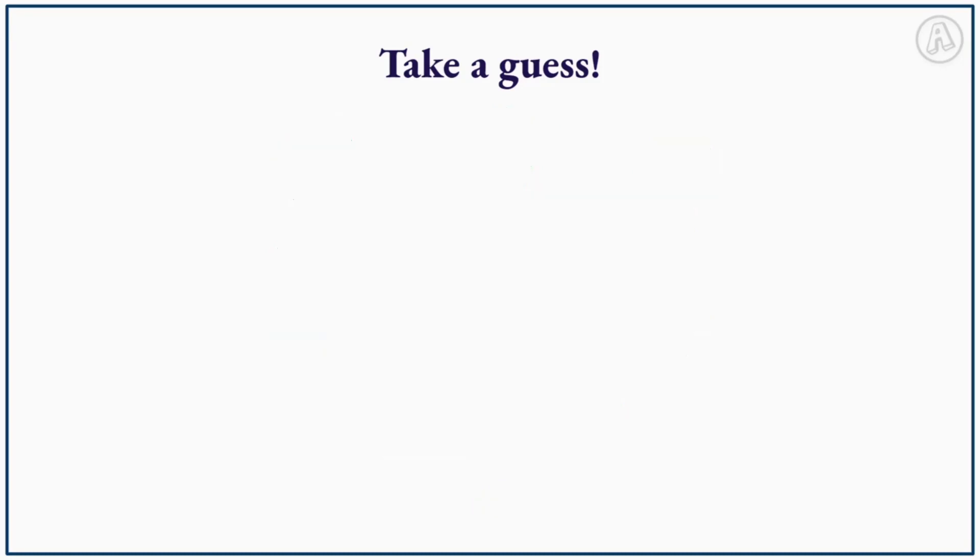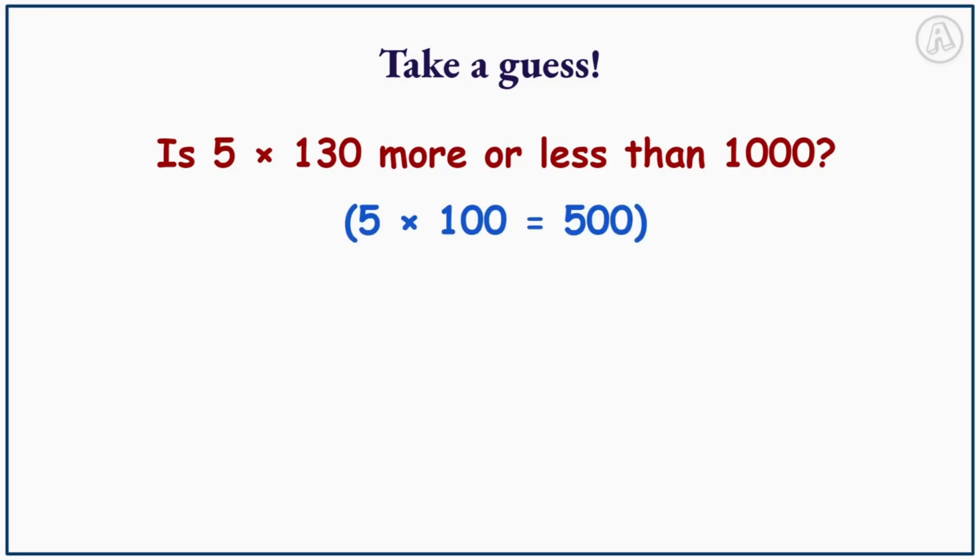Now let's answer the following question without completing a calculation. Is 5 times 130 more or less than 1000? We can start by rounding. So let's round 130 to the nearest hundred. This gives us 5 times 100, which equals 500. So do you think 5 times 130 is more or less than 1000?